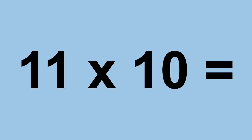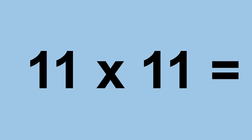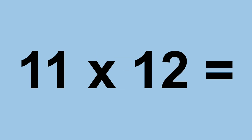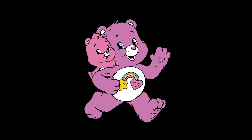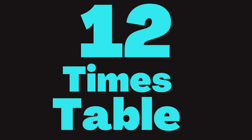Eleven times ten equals one hundred and ten. Eleven times eleven equals one hundred and twenty-one. Eleven times twelve equals one hundred and thirty-two.